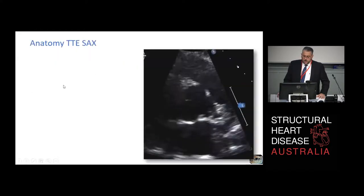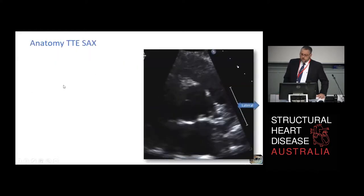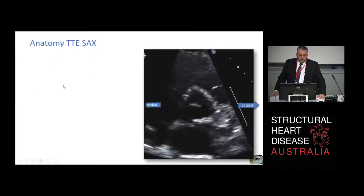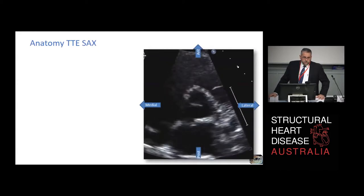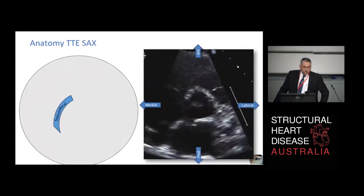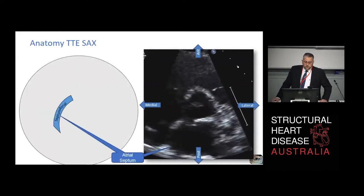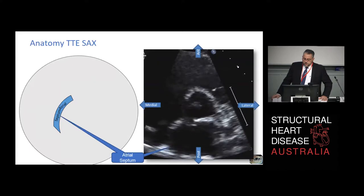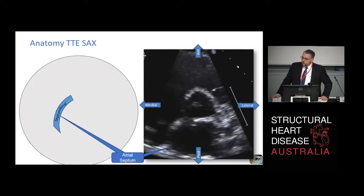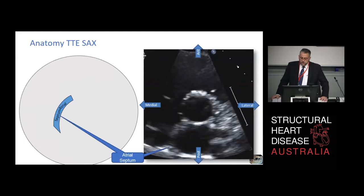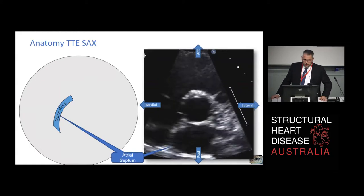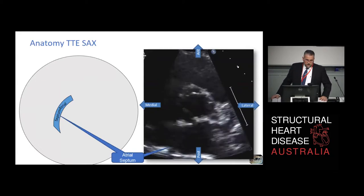Let's start by talking about the atrial septum - imaging the atrial septum. This is a parasternal short axis of the heart, a standard parasternal short axis, the first view really on any echo where you get to see the atrial septum.